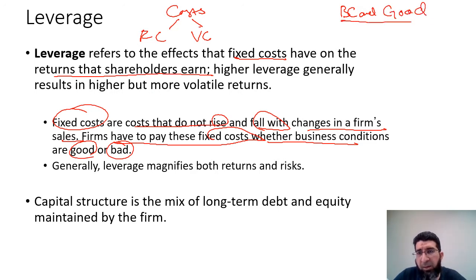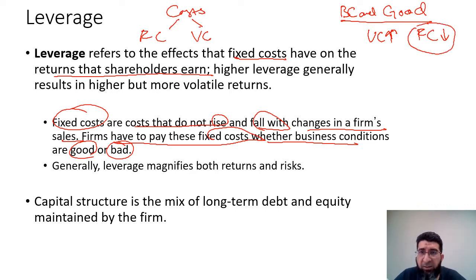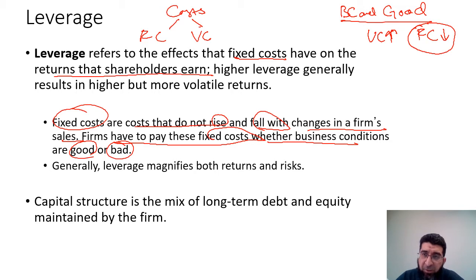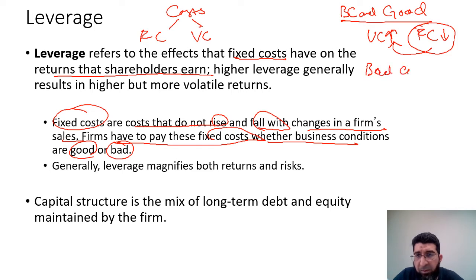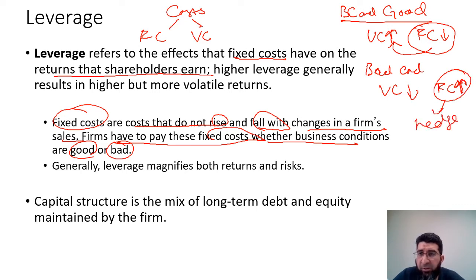If business conditions are good, we expect firms to have high variable costs and low fixed costs. This is because firms do not want to tie up a lot of cost in fixed costs. In good business conditions, costs tend to go down as volume increases, and favorable contracts are available to shift costs to the variable side. In bad business conditions, variable costs tend to go down while fixed costs tend to go up, primarily to provide a hedge against rising costs.